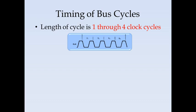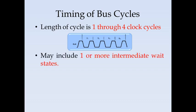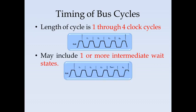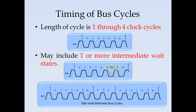The clock signal is a square wave with rise time and fall time. It may include one or more intermediate wait states — if the memory or peripheral is slow, it will respond slowly, and using the READY signal, an additional wait state is introduced. T1 represents the idle state between bus cycles; from one bus cycle T1-T4 to the next, this period indicates the idle state.